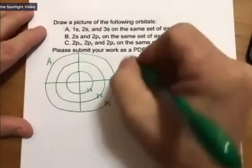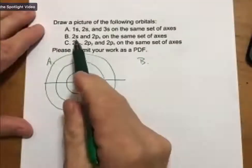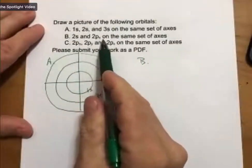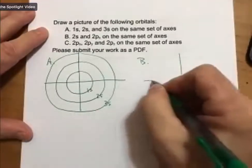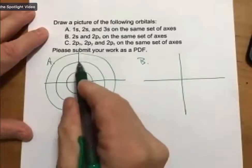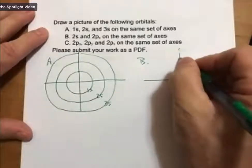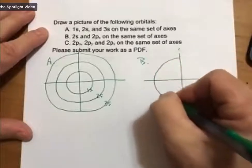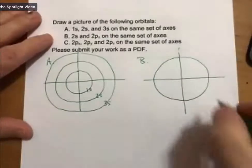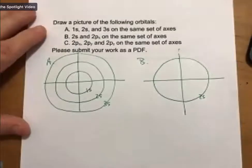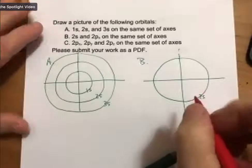For letter B, we will now draw the 2s and 2px on the same set of axes. The 2s I'm going to try and draw exactly the same, so I'm going to try and draw it just like I did over here. It's going to be a sphere, it's going to be about this big. I'm drawing the sphere as a circle, and that's 2s.